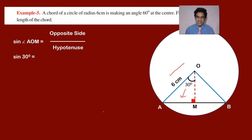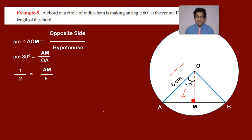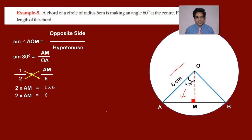Sine 30 degrees equals AM by OA. We know sin 30 degrees equals 1 by 2, so 1 by 2 equals AM by OA. OA is 6 centimeters. Doing cross multiplication, 2 into AM equals 1 into 6, so 2 into AM equals 6 centimeters. Therefore AM equals 6 by 2, which is 3 centimeters.